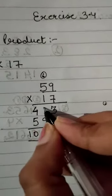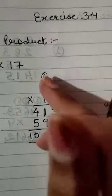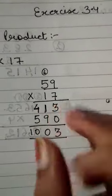So I have written 41 here. So we have multiplied 7 with 59 and written the answer here. Okay.